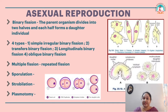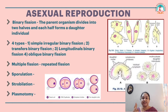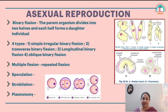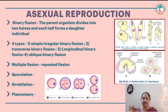Under asexual reproduction, we were talking about binary fission. The parent organism divides into two halves and each half forms a daughter individual. The four types of binary fission are simple binary fission, irregular binary fission, transverse binary fission, longitudinal binary fission, and oblique binary fission. You can take a look at the pictures here.